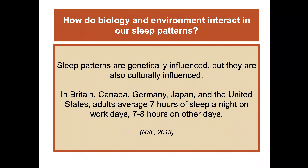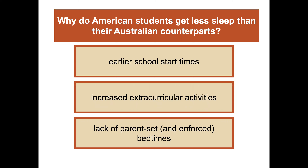How do biology and environment interact in our sleep patterns? There does appear to be some genetic influence on our sleep patterns. But there's also cultural influence. In Britain, Canada, Germany, Japan, and the US, adults average seven hours of sleep a night on work days and seven to eight hours on other days. American students appear to get less sleep than some counterparts, such as Australian students, possibly due to earlier school start times, increased extracurricular activities, and lack of enforced bedtimes.